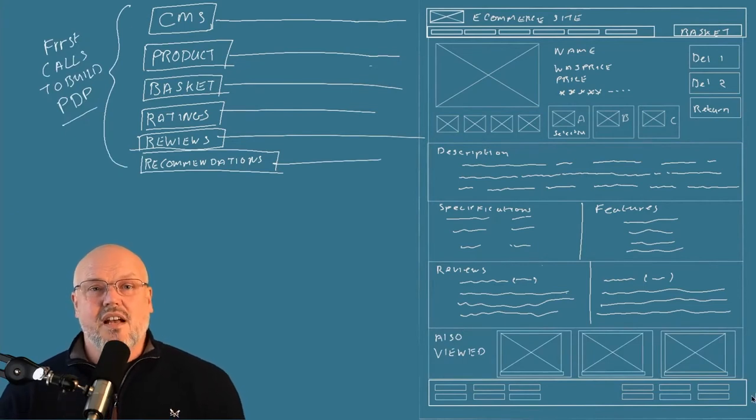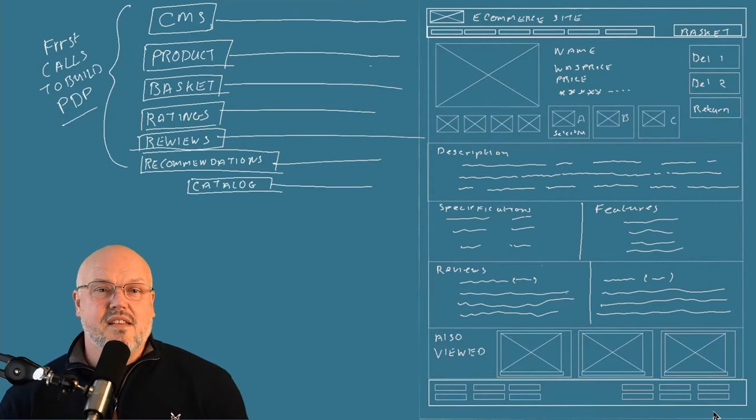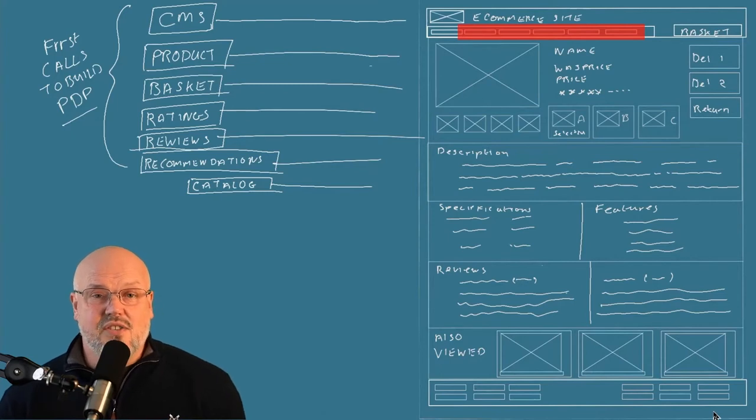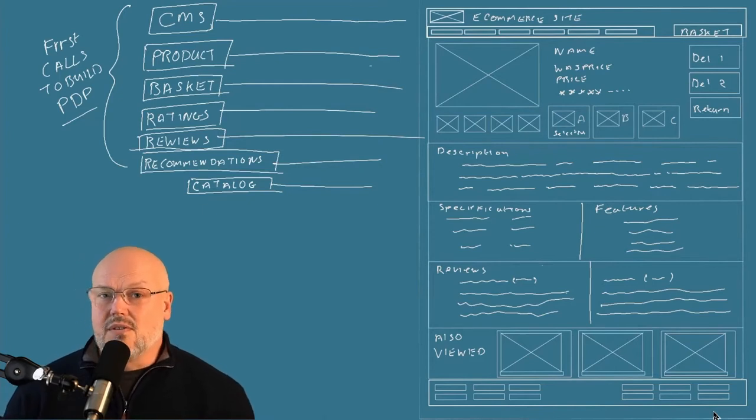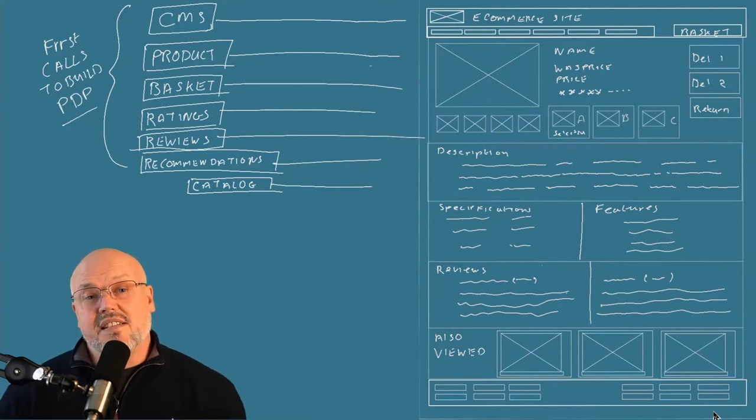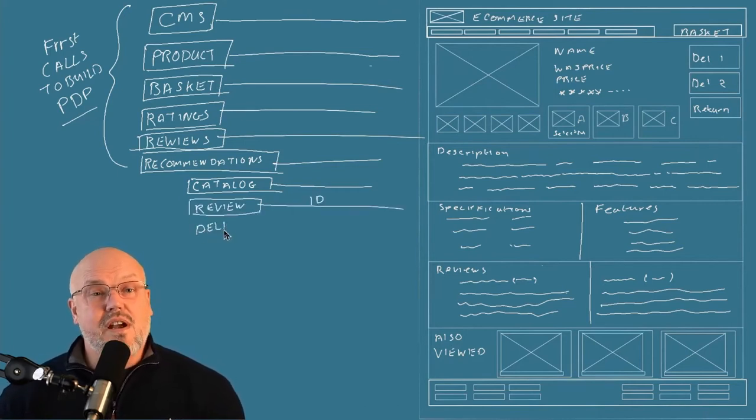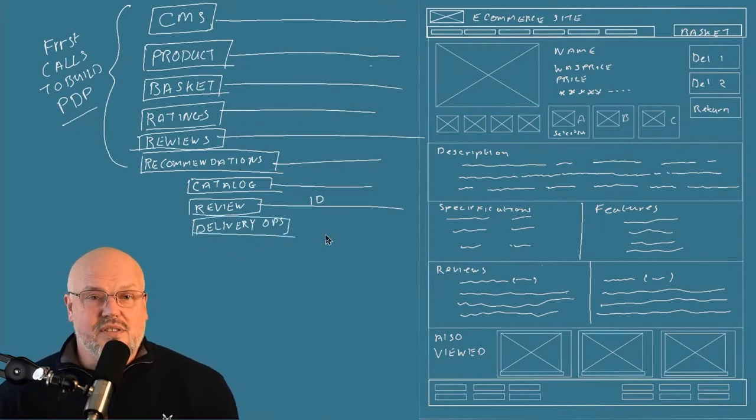Once these first initial calls are made, other calls will be made to other microservices. For instance, the initial CMS calls will bring back some standard content, but it also may reference items in the catalog microservice. You may need to call the catalog microservice to actually build the entire navigation. Also when it comes to reviews, you'll be given a list of review IDs and you'll have to make a series of calls to the review API to bring back the full details. The product itself will bring back the basic details of the product such as its name and description. It will also bring back a list of variants, and in that list it will indicate which variant is the default variant.